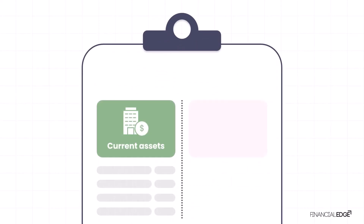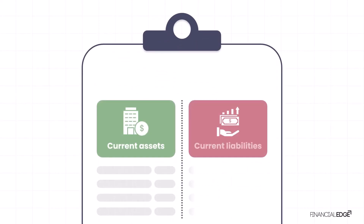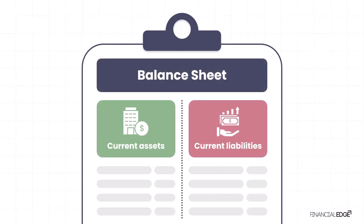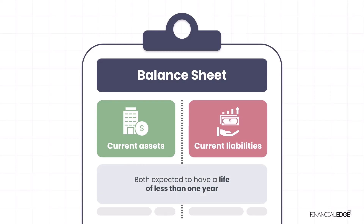Current assets and current liabilities both reside on the balance sheet. Both have the same characteristic in that they're both expected to have a life of less than one year. Hence they're given the name 'current' as opposed to 'non-current'.